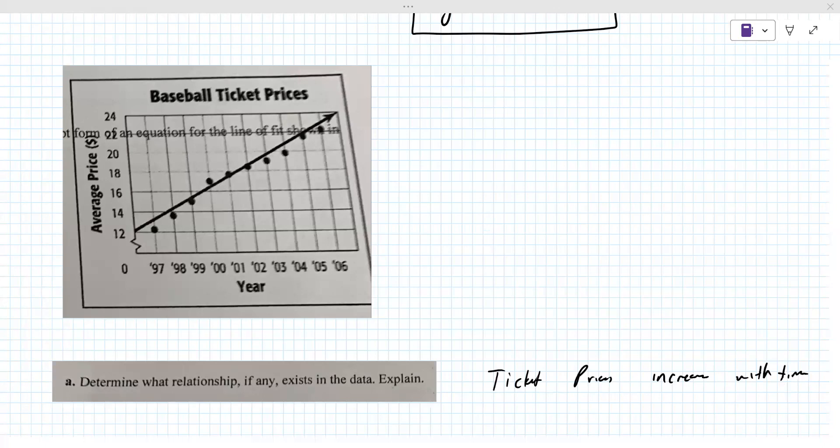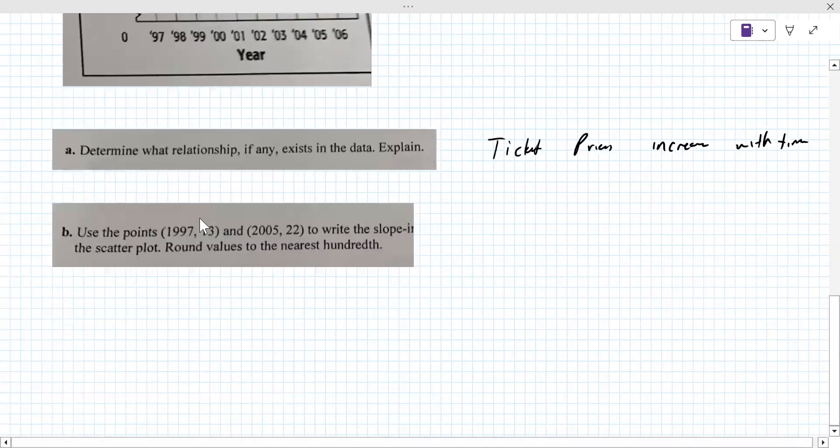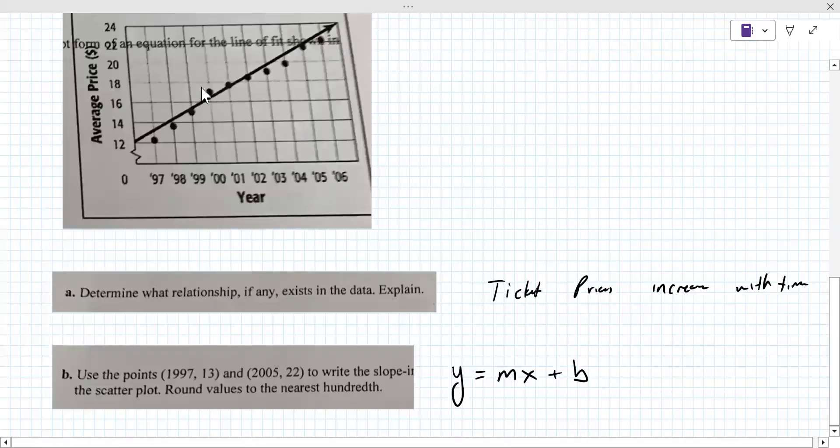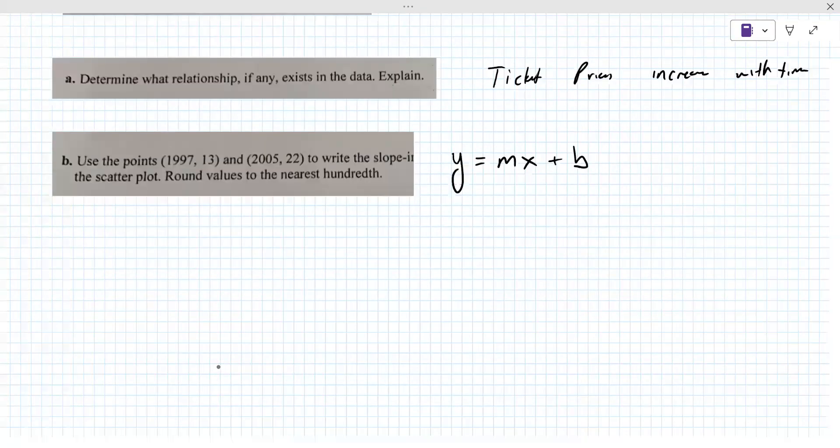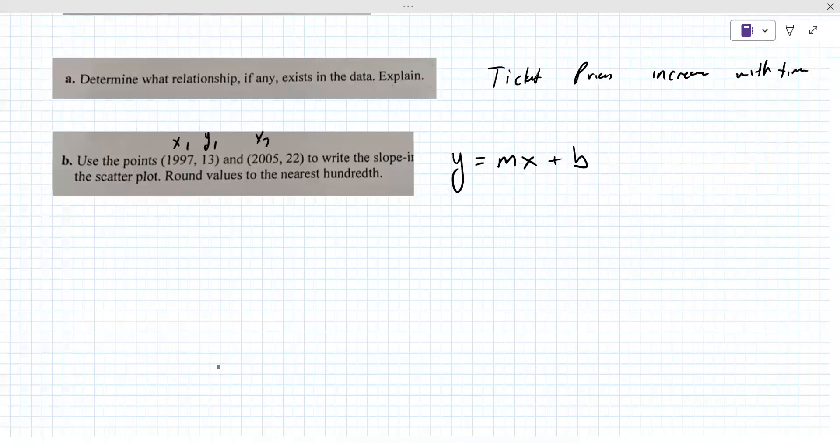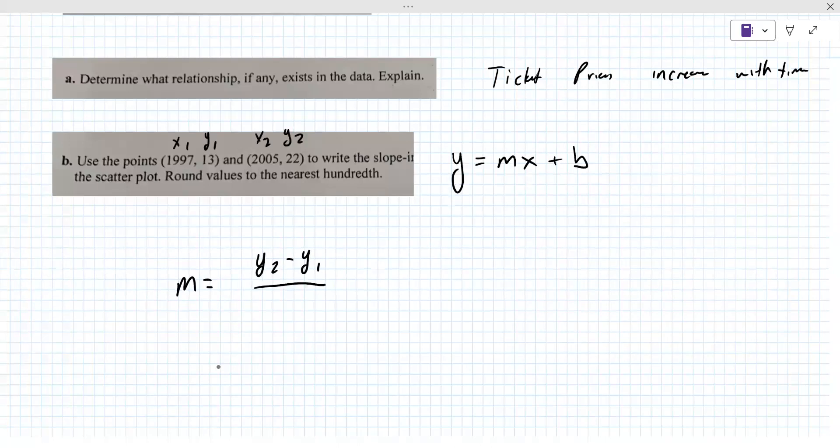Part B says to use two specific points to write the slope intercept form of the equation for the line of best fit. So that is again Y equals MX plus B, but this time, rather than going to the graph and doing the rise over run thing, you're going to use these two data points. This is X one, this is Y one, this is X two, and this is Y two. I'm going to write the formula for slope. And I want you to calculate that. I'm going to step away for like 30 seconds to grab a drink, but I'll be right back.